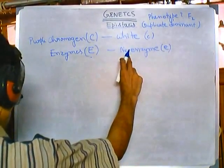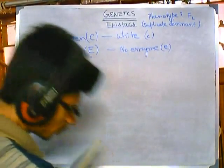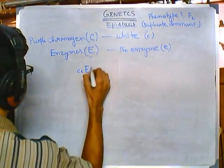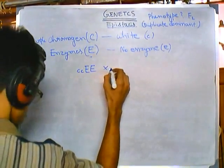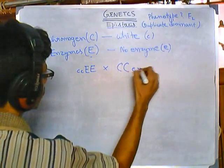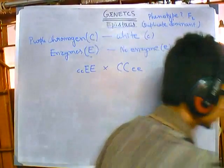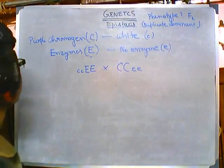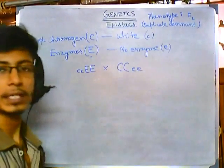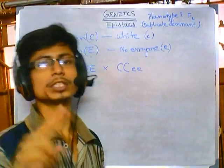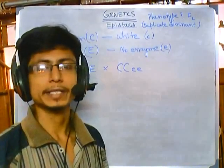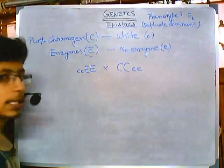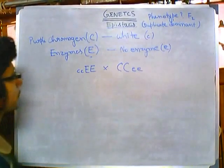Now, what will be the F2 individuals of the four o'clock if the mating is done in this way? This is the question. In this duplicate dominant case, we have two genes both of which are dominant and both are epistatic. Purple chromogen is given by cap C, white by small c.